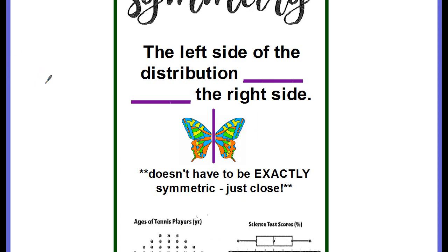Symmetry. You've already learned about symmetry in elementary school. It's where the left side of the distribution looks like the right side. Think of your butterfly. If you cut your butterfly in half, the two sides look alike, don't they? They're symmetric. So this is what we call symmetry. And in our graphs, it doesn't have to be exactly symmetric, just pretty close.